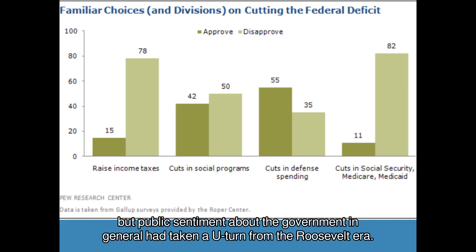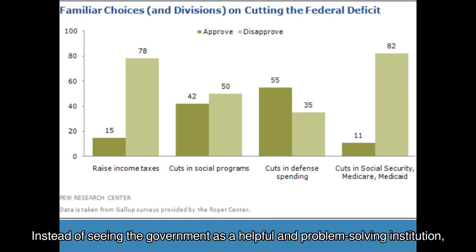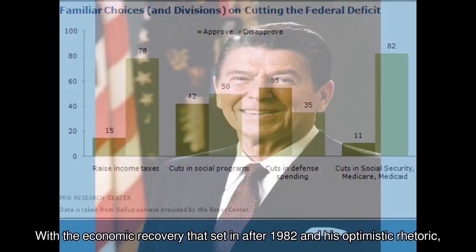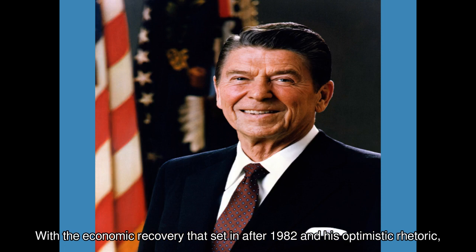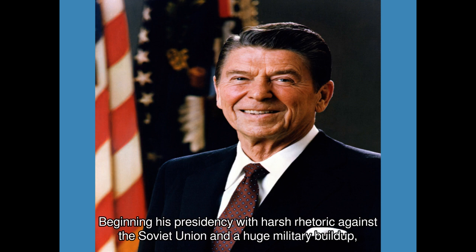Instead of seeing the government as a helpful and problem-solving institution, many believed that not only was it ineffective at solving national problems, but it also often made things worse. With the economic recovery that set in after 1982 and his optimistic rhetoric, Reagan lifted the confidence of Americans about their nation and its promise — confidence that had eroded with the economic and foreign policy blows of the 1970s. Beginning his presidency with harsh rhetoric against the Soviet Union and a huge military build-up, Reagan helped move the two superpowers to the highest level of cooperation since the Cold War began.